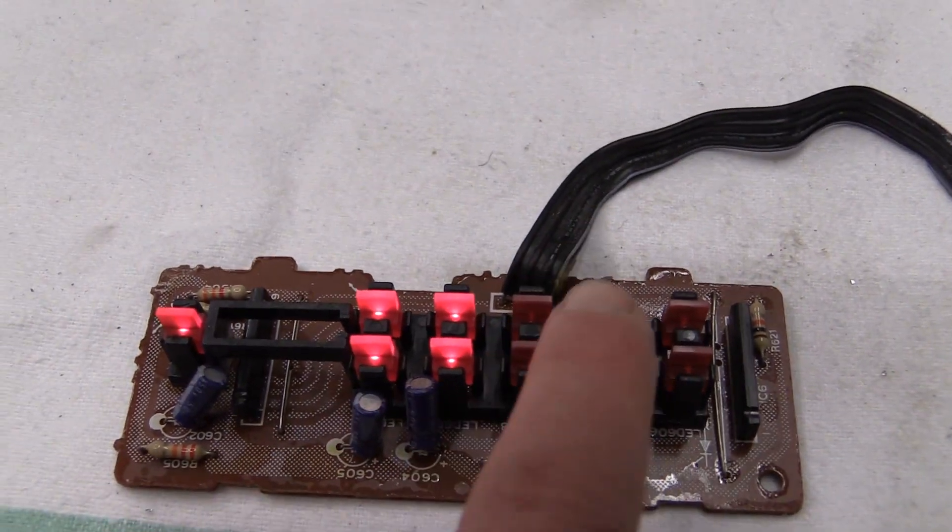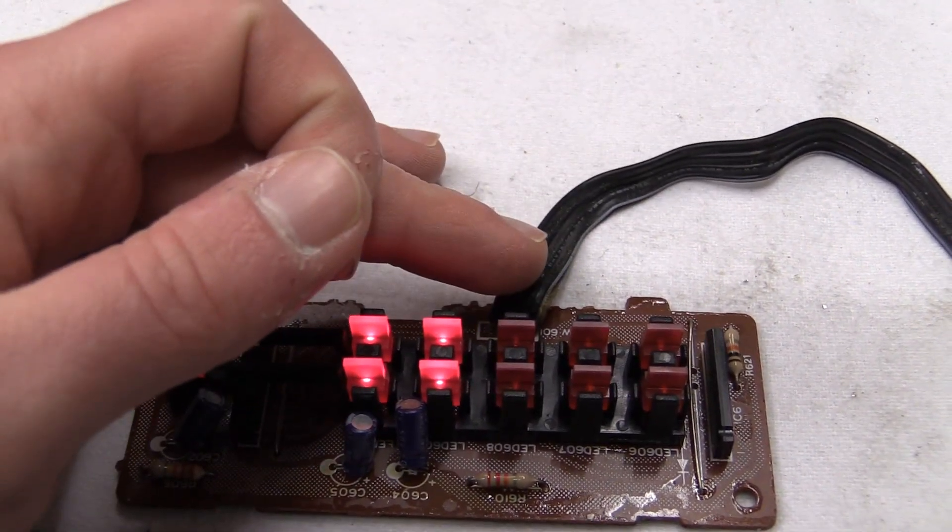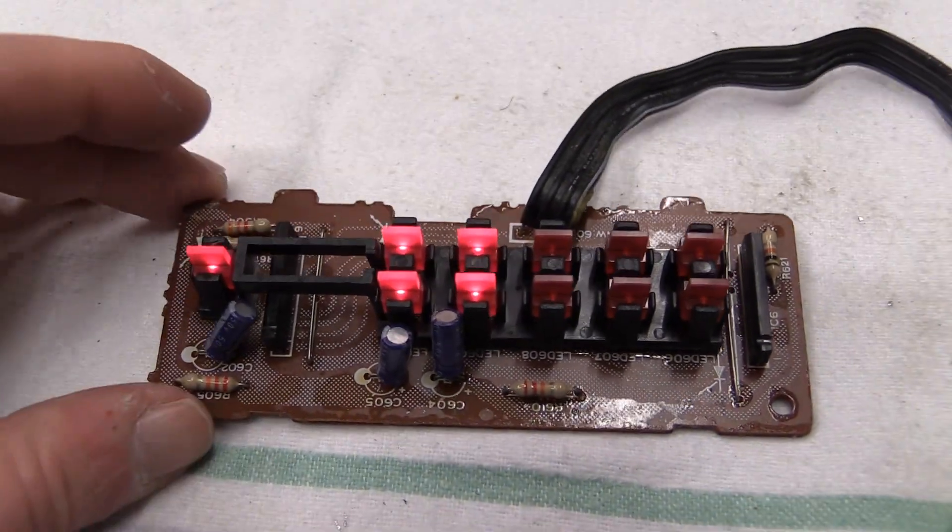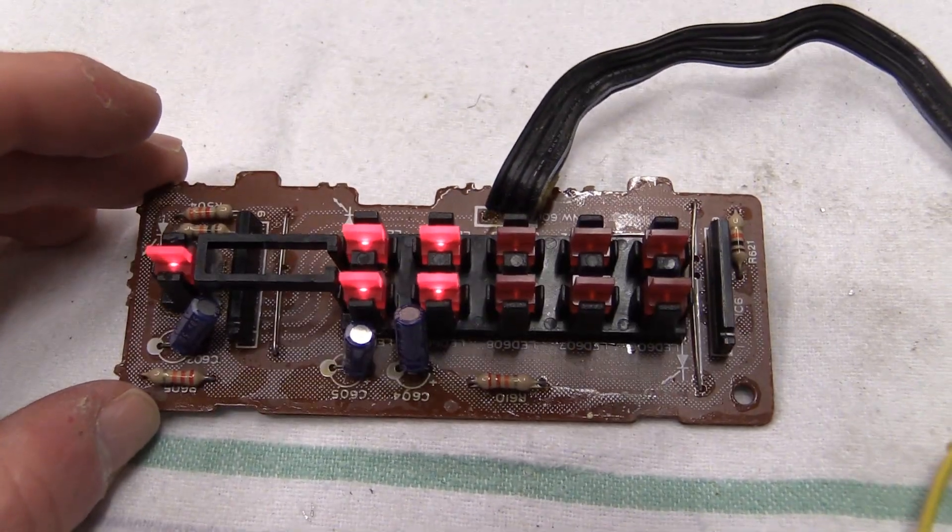Going from right to left, we got ground, that's the one with the stripe. We got power in, 12 volts. We got two audio signals, just regular line-level audio signals.